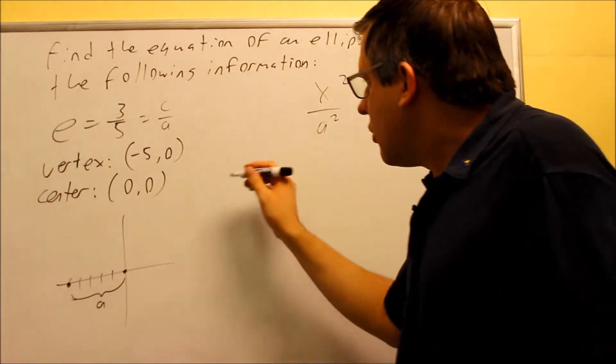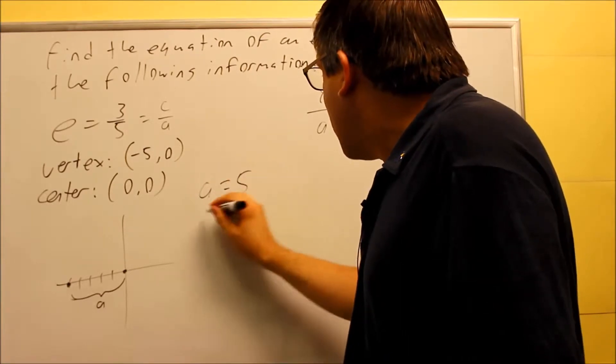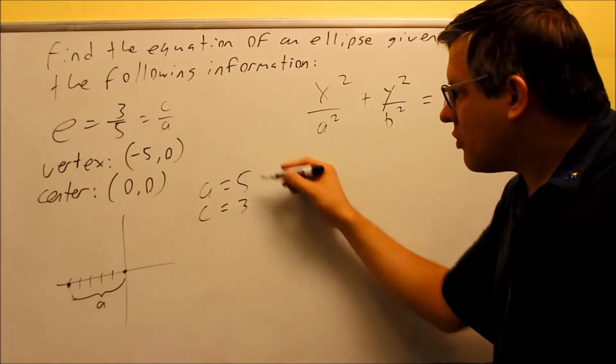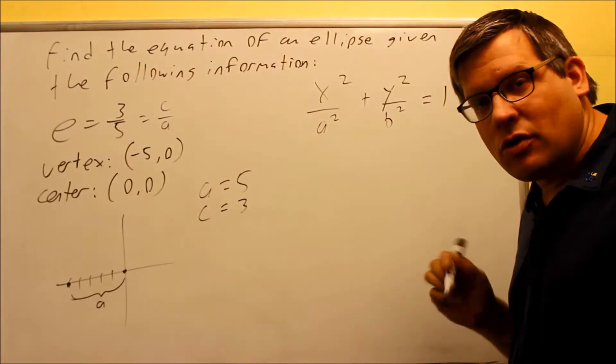but this tells me also that my a is 5, but it tells me also that my c is equal to 3. So I have these two pieces of information that I could have gotten directly from the eccentricity formula.